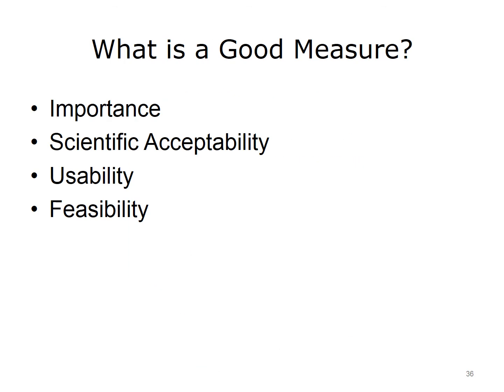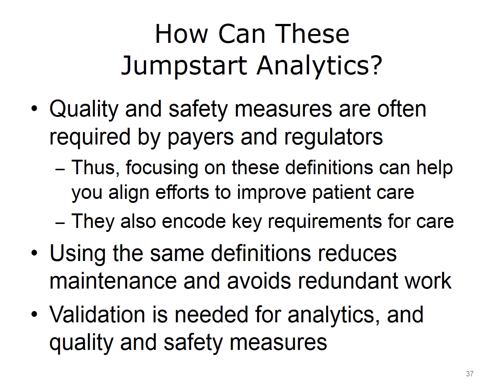How do we know if measures are good? We can ask ourselves if they're important, as many of our heart failure measures were — do they measure something that has a real and true effect on health and well-being? We can look at scientific acceptability: are we truly measuring what we mean to measure (validity), and if we measure twice in the same situation, do we get the same result (reliability)? We also need people to understand the measure, use it, and be able to calculate it reasonably — also called feasibility. These strategies help jumpstart your analytics program: quality and safety measures may already need to be reported at your institution, and you can leverage that infrastructure to align efforts, reduce maintenance, and avoid duplicating work.